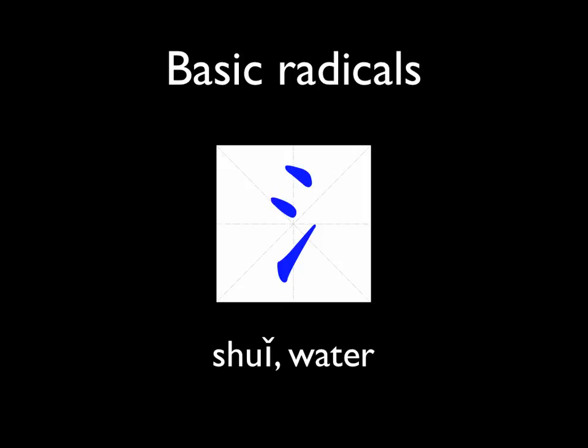Once you learn the radicals, it can really help you to remember all the different characters. These six basic radicals will really help you to learn the characters in Unit 2. So I would like you to take time to practice how to say them and how to write them. In the next video, we are going to learn about stroke orders — and then you can finally start learning how to write the characters by yourself.